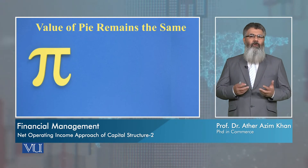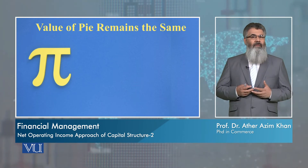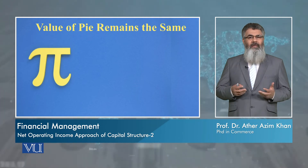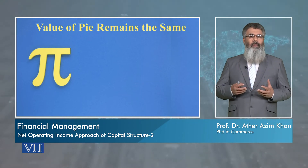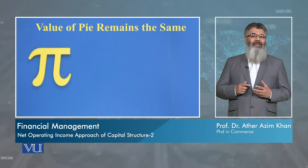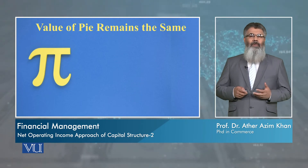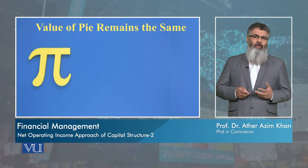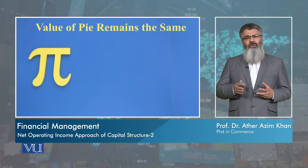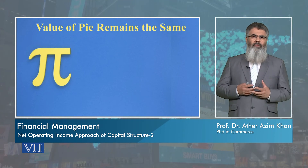If you make four pieces, each piece will be 90 degrees. If you make two pieces, each piece will be 180 degrees. But when you sum them up, their total value will always be 360. This argument is then applied to the value of a firm — a firm or business is a pie, and capital structure, debt and equity, are the portions of that value.